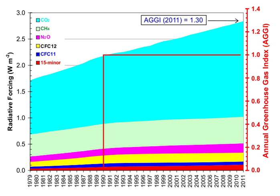A greenhouse gas is a gas that absorbs and emits radiant energy within the thermal infrared range. Greenhouse gases cause the greenhouse effect. The primary greenhouse gases in Earth's atmosphere are water vapor, carbon dioxide, methane, nitrous oxide, and ozone.